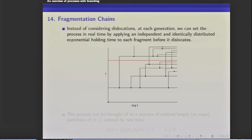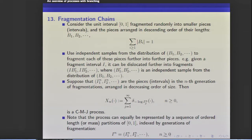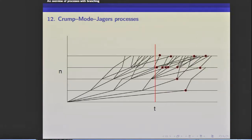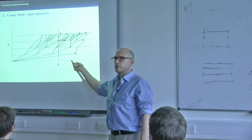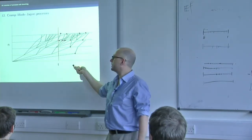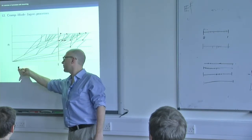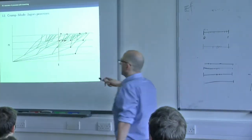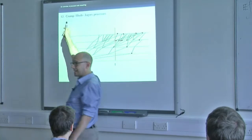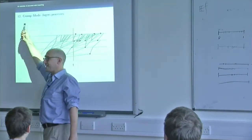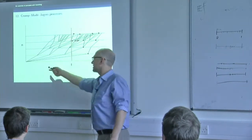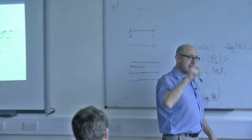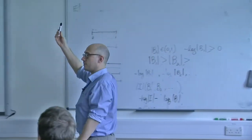So this is what we can think of as the fragmentation chain - how it's valued at generation N. Now we want to move this into real time, and this is where it gets really confusing. The CMJ process was motivated by the branching random walk, but when we took space for the branching random walk to mean real time, I've now converted this axis to minus log fragment length, and I want to convert this axis to real time.